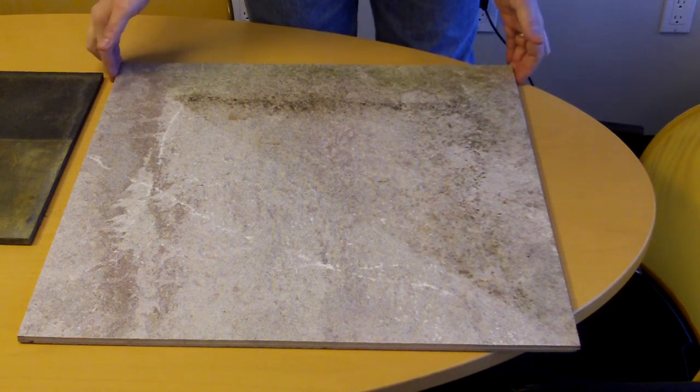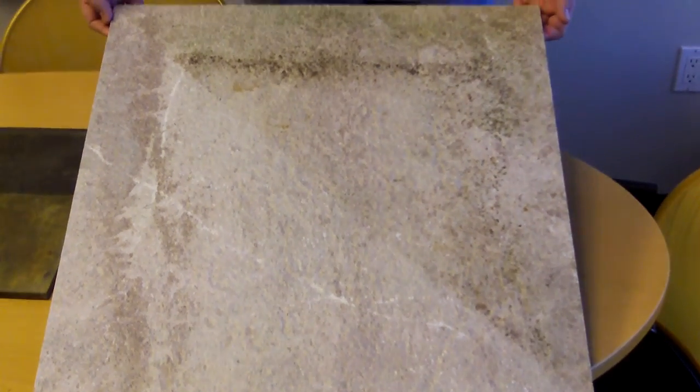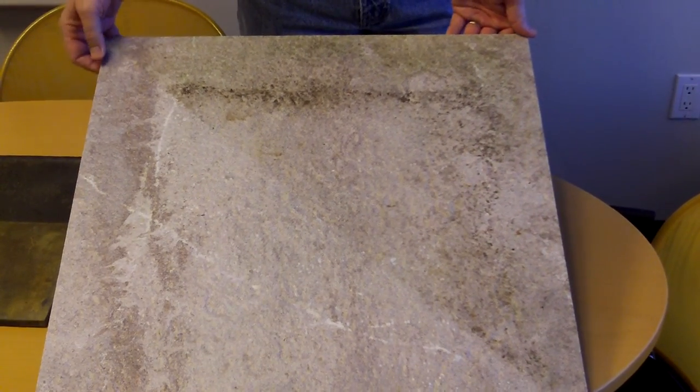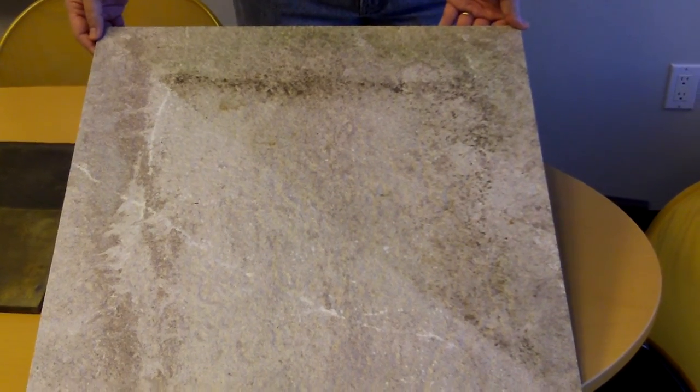This is a 24 by 24 double loaded porcelain tile with some glazing elements to it but a rough surface to show you what happens over time.